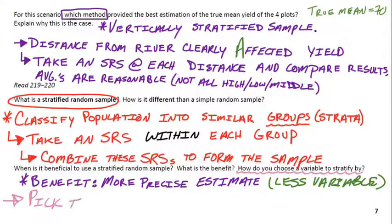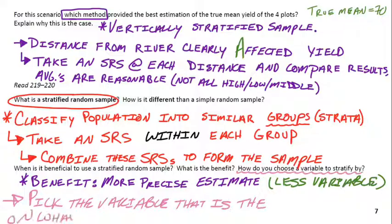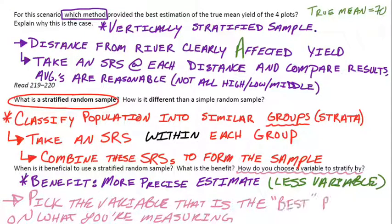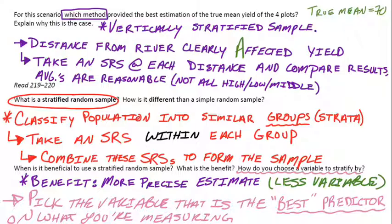How do we know what to make the groups, or what variable to stratify by? We need to pick the best predictor of what we're measuring. In the river example, it was the column — the vertical grouping — that worked for our strata.